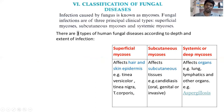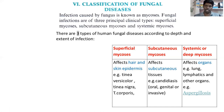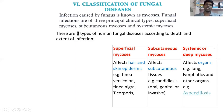The three types are: superficial mycosis, subcutaneous mycosis, and systemic mycosis. Superficial mycosis infects the superficial layers of the body such as skin, hair, and nails. Subcutaneous mycosis penetrates just below the skin into the subcutaneous layer. Systemic mycosis penetrates deep into organs, spreading throughout the body and infecting internal organs like the brain and lungs.